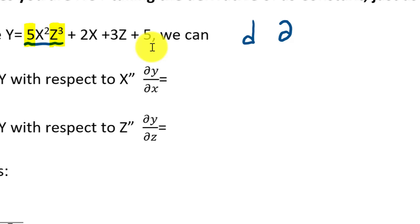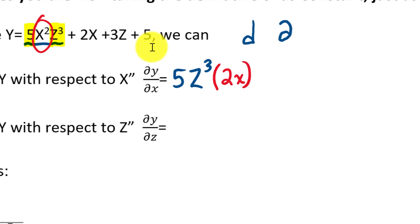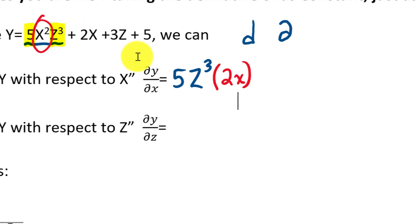So we write 5z³, and then we take the derivative of the x² part. The derivative of x² is 2x, so we get 5z³ · 2x. We're done with that first term. Moving on to +2x — the derivative of 2x with respect to x is just 2, so we add +2.